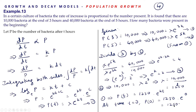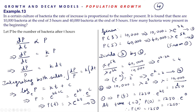Therefore, 1250 bacteria were present in the beginning. So P(0) = 1250. This is the population growth model. Up to finding the general solution carries 2 marks, finding a relation for k carries 1 mark, and the final answer carries 1 mark — a total of 4 marks for this question.